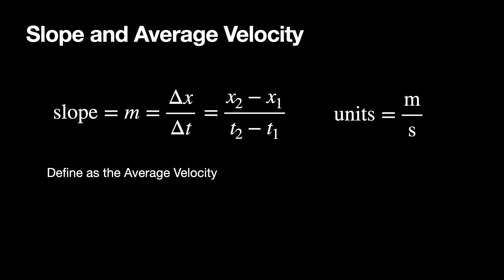And we define this as the average velocity. So the average velocity is the slope, which would be the change in x over the change in time. And so if I use the data from before, I knew the slope was 0.1, so that means the average velocity is 0.1 meters per second.